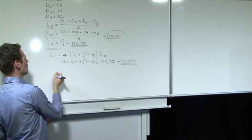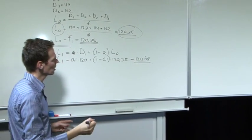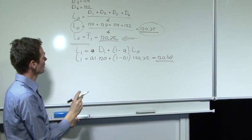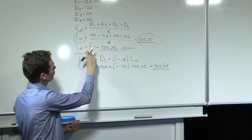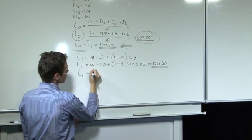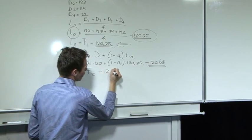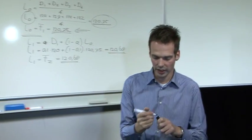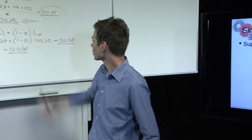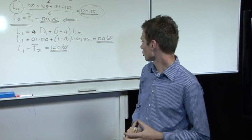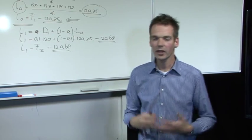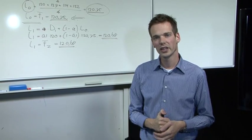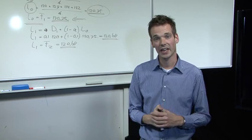So level 1 is 120.68, which means forecast 2 is 120.68. In this case, the forecast for period 2 in the supermarket example would be 120.68. This is an example of simple exponential smoothing. In the coming videos we will take into account a trend and seasonality.